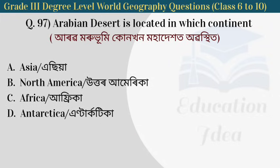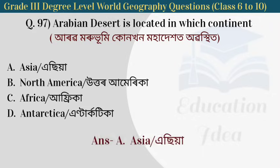Next question: the Arabian Desert is located in which continent? The answer is Asia — the Arabian Desert is located in Asia.